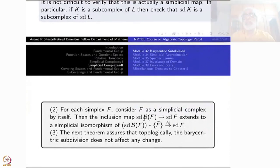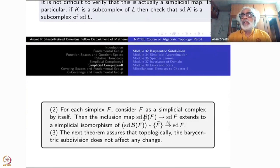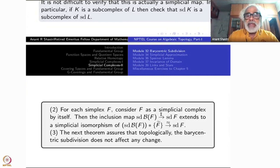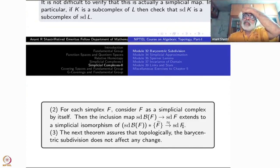The second remark: for each simplex F, you can think of F as a simplicial complex — the full simplicial complex. Look at the inclusion of sd(∂F) into sd(F). ∂F is a subcomplex of F, so sd(∂F) maps to sd(F) as an inclusion map. This extends to a simplicial isomorphism: if you take the cone over sd(∂F) with apex F-hat — the barycenter — what you get is sd(F).